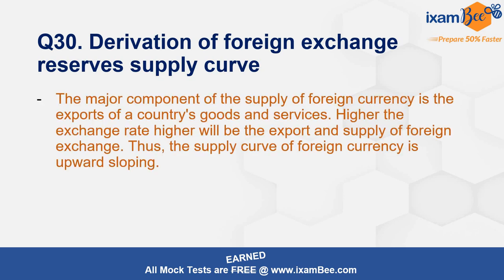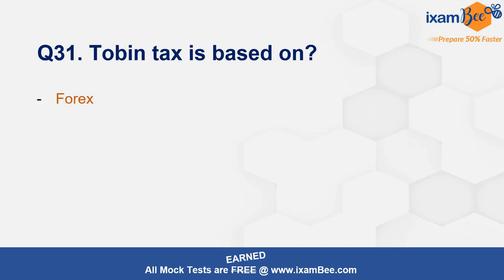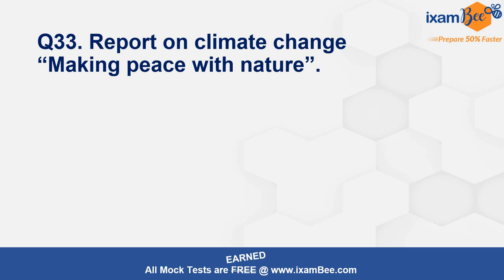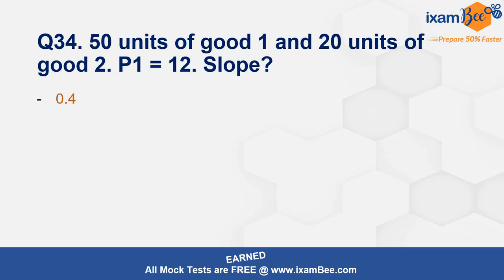On how foreign exchange reserve supply is derived — the major component is exports of goods and services; higher exports lead to higher supply of foreign exchange. Then, Tobin tax for India is based on shares. There was a conceptual question on purchasing power parity with statements. There was also a question on a climate change report called 'Making Peace with Nature' — it was published by UNEP.